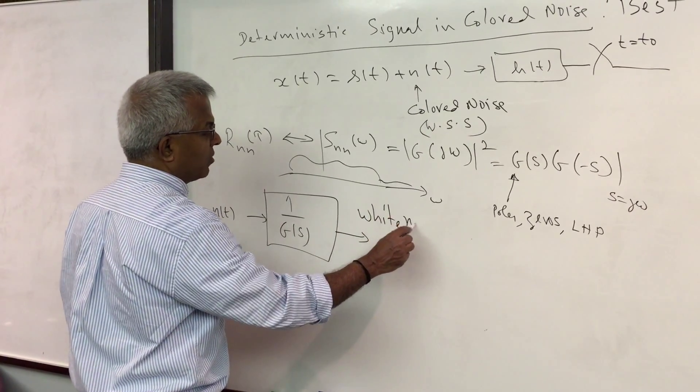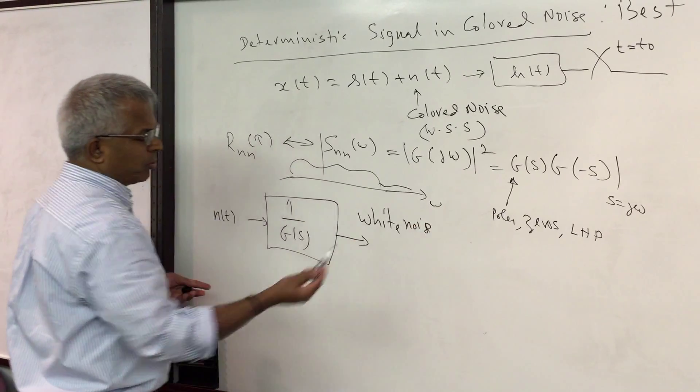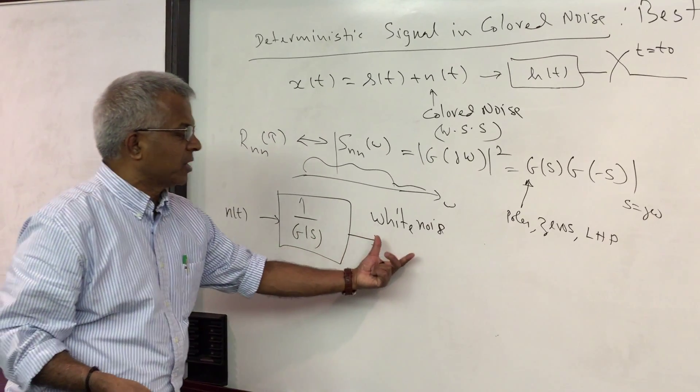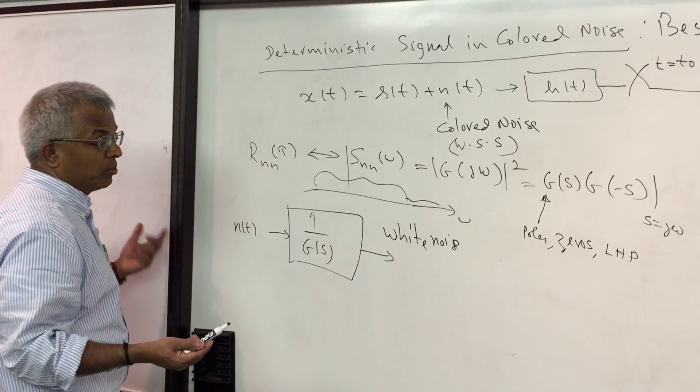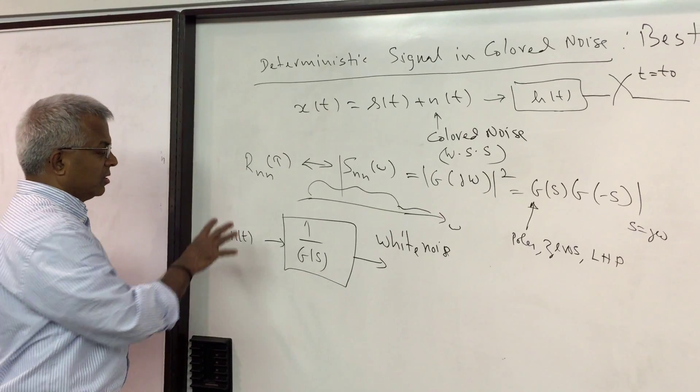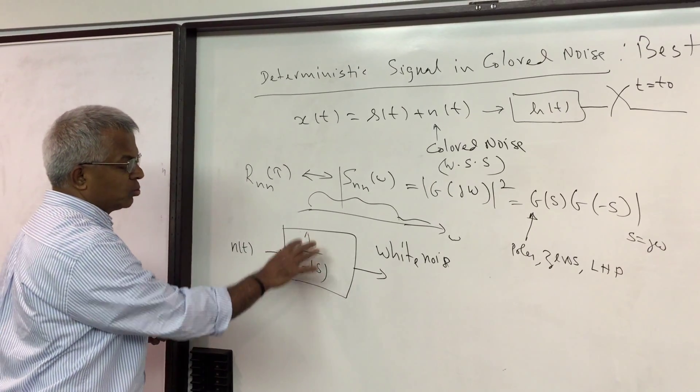So this is called the whitening filter and the proof is very simple. The power spectral density is the system transfer function squared multiplied by the input power spectral density.